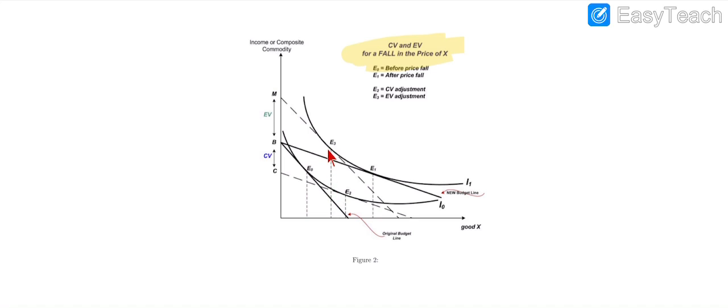Here, the BC gap represents the compensatory variation, while the BM gap is presenting the equivalent variation.